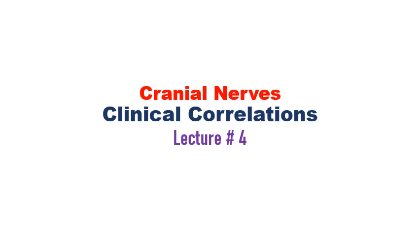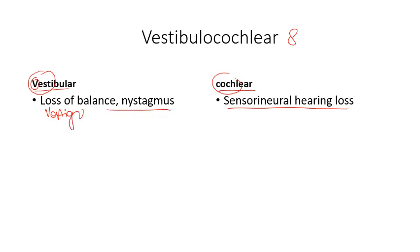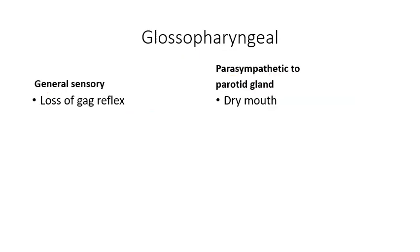Today is the fourth lecture in the cranial nerve clinical correlations series. Cranial nerve eight is the vestibulocochlear nerve, which has two components: the vestibular component and the cochlear component. If the cochlear component is damaged, it causes sensorineural hearing loss, while damage to the vestibular component can lead to vertigo and nystagmus.